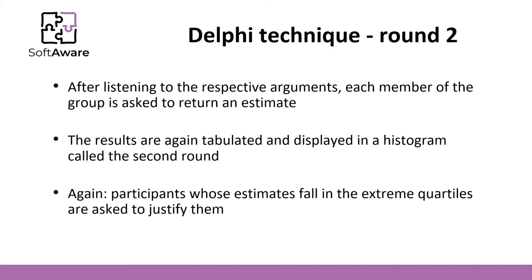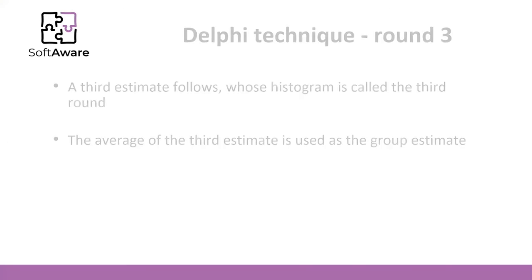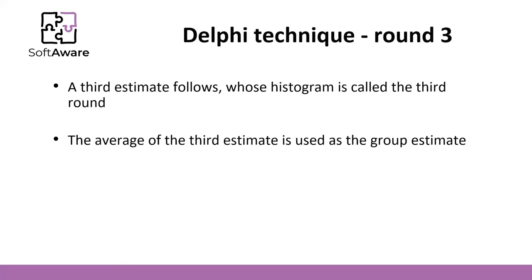Then we start round two. After listening to the respective arguments, each member is asked again for a new estimation. Results are again tabulated and displayed, and those in the extreme quartiles again justify their estimates. In round three, a third estimation follows. The average of only the third-round estimates is used as the group's final estimation.